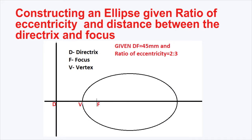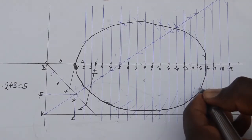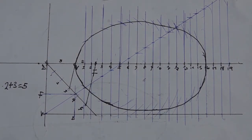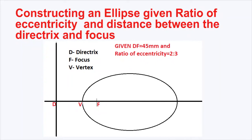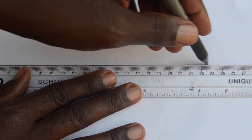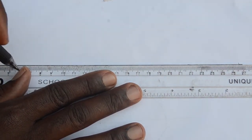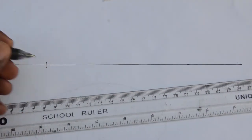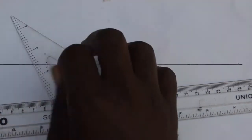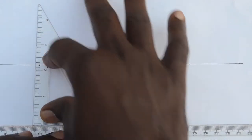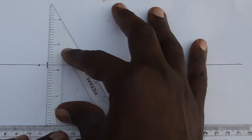We are going to see how to construct an ellipse given the ratio of eccentricity and the distance between the directrix and the focus. We start by constructing a horizontal line, which acts as our axis. Mark off a random point along this horizontal line and draw a line perpendicular at this point — this becomes our directrix point D.